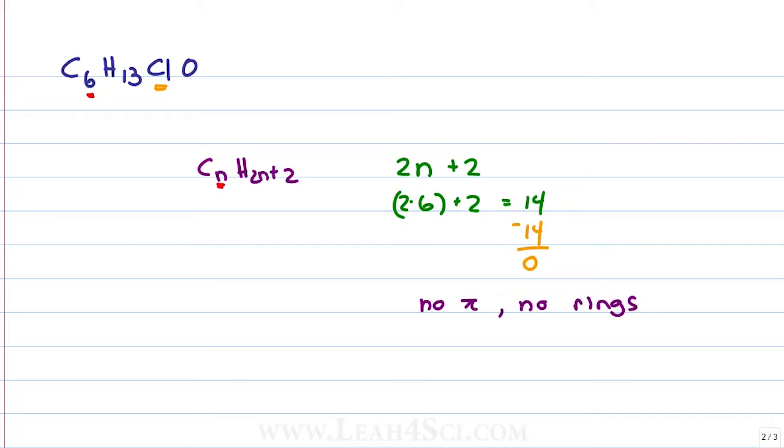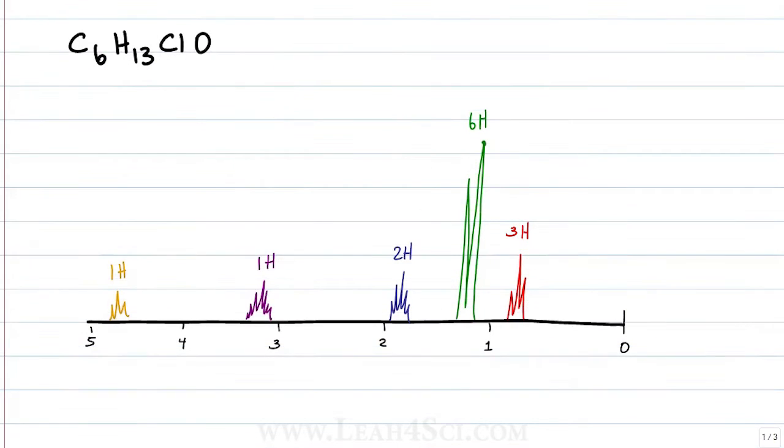This helps us when we look at the structure because we know we don't have to consider anything crazy. This also helps us with the oxygen because it immediately rules out anything with a carbonyl. Remember, a carbonyl is a carbon double bound to oxygen which would require an index of hydrogen deficiency. Now that we have an idea for the molecule, let's take a look at the graph.